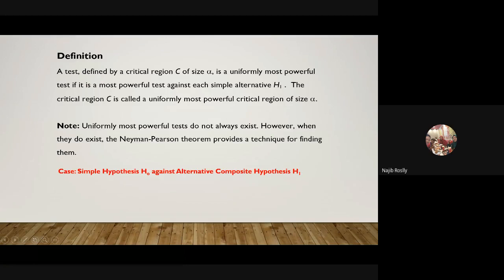In this case, we will have a simple hypothesis and also an alternative composite hypothesis. You will have H0 and H1. Sometimes it can be both composite, or sometimes H0 is a simple hypothesis and the alternative is a composite hypothesis. A simple hypothesis means H0: θ equals some value. For a composite hypothesis, θ is less than or equal, greater than or equal, less than, greater than, or not equal to some value.